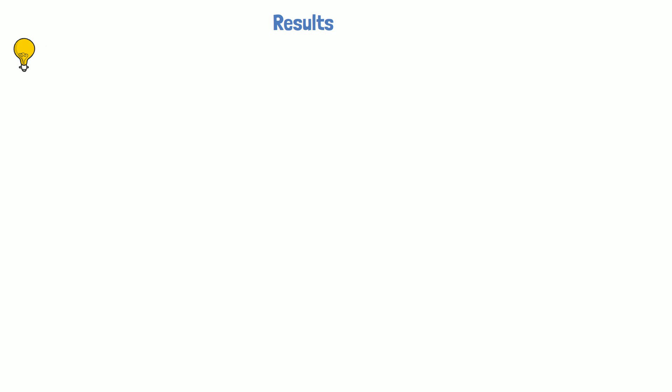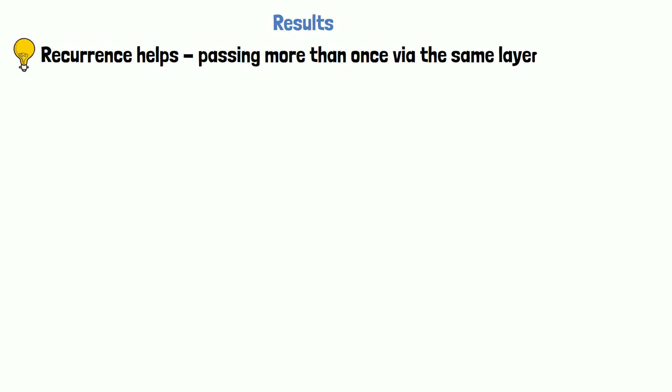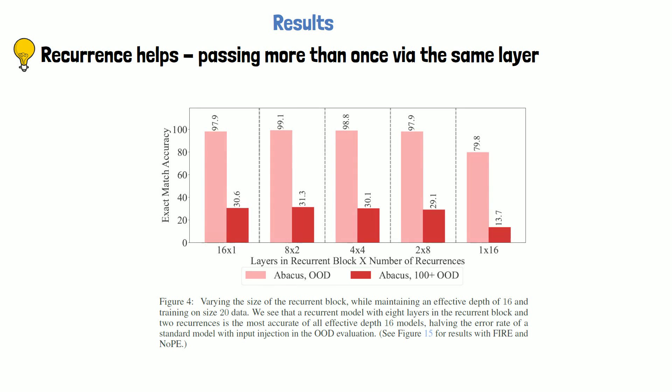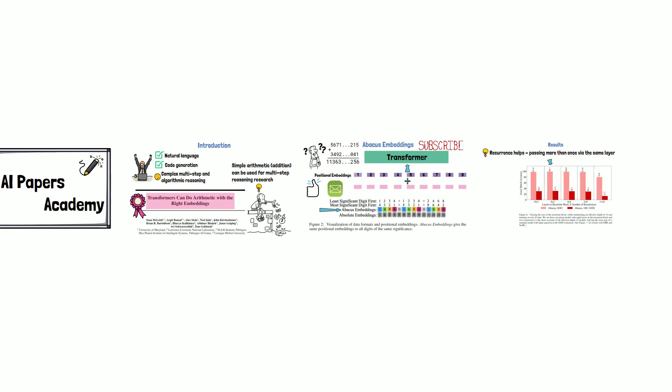The best result is achieved when also adding recurrency, meaning that each layer is used more than once in a forward pass of the transformer. In the following figure from the paper, we can see that the best result of 99.1 accuracy is achieved when using a transformer with 8 layers where each layer is used twice in a single pass. Thank you for watching and stay tuned for more reviews of AI papers.